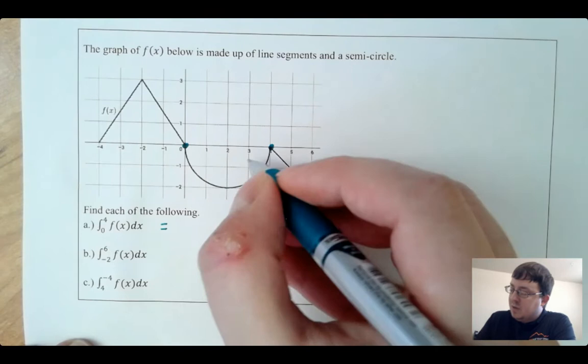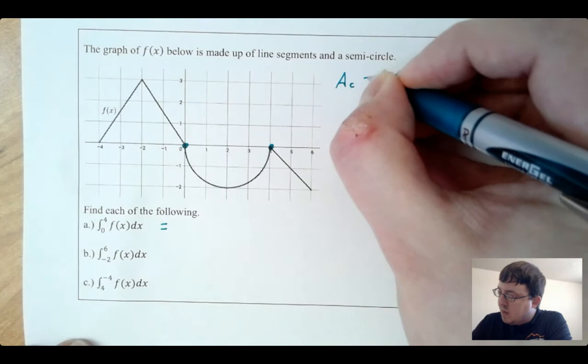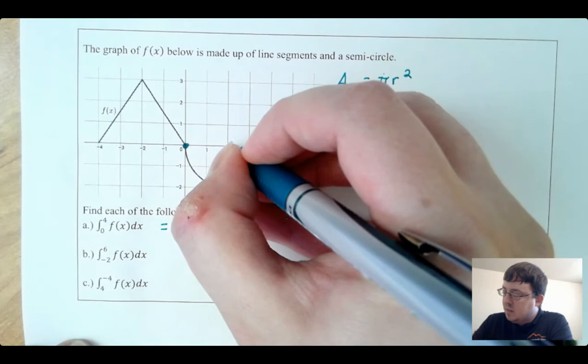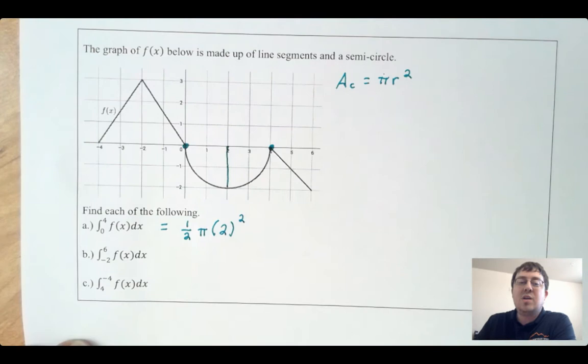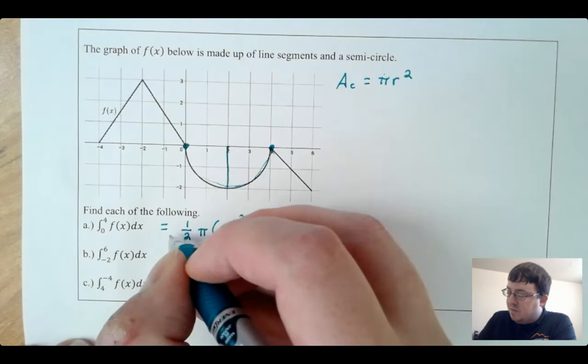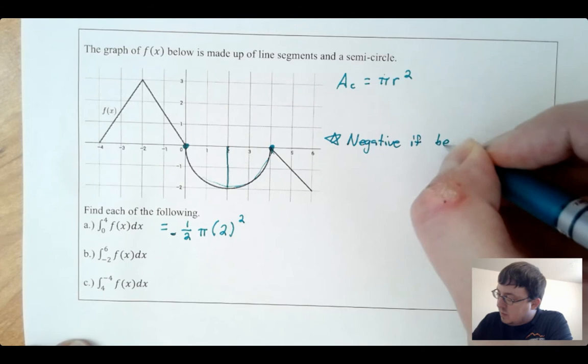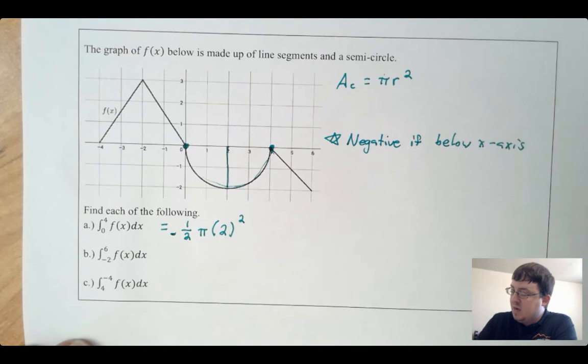I only want half of it, so I want one half times π r². The radius of this circle is 2. One thing to note is that because this semicircle is underneath the x-axis, this definite integral value is going to be negative. Remember: it's negative if below the x-axis. So I put a negative here: negative one half times π times 2 squared, which is just negative 2π.